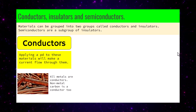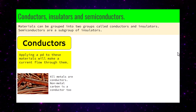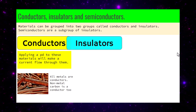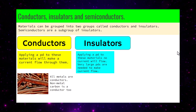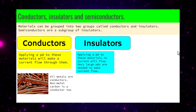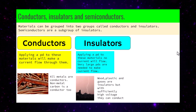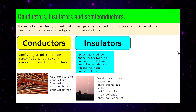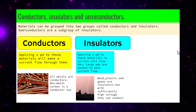All metals are conductors — for example, carbon, even though it's a non-metal, is a conductor too. For insulators, applying a potential difference will not let electricity flow through them. In fact, very large potential differences or voltages across these materials are needed to make current flow. Wood, plastic, and gases are insulators.